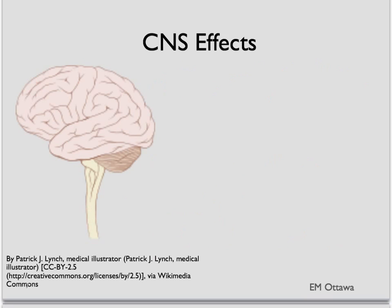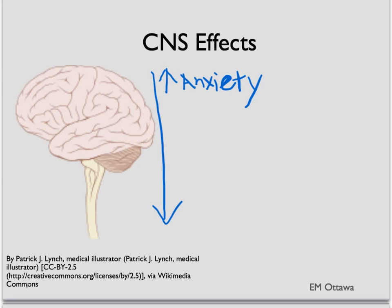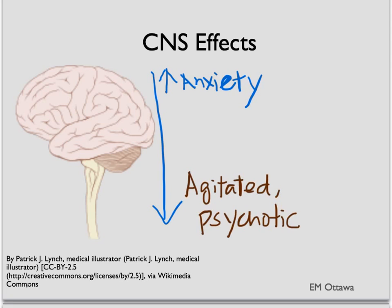In the brain, in hyperthyroidism, the patient might feel nervous and jittery. In patients with thyroid storm, the patient now becomes agitated and psychotic. They might even have seizures.